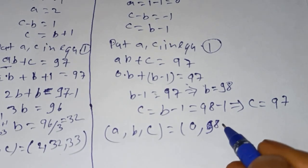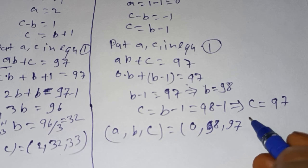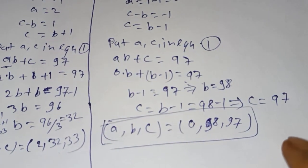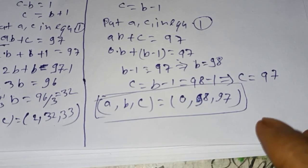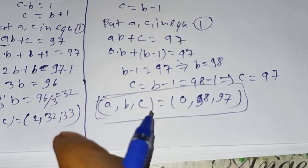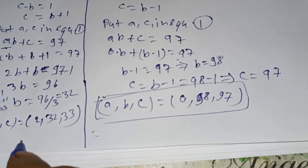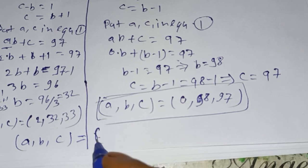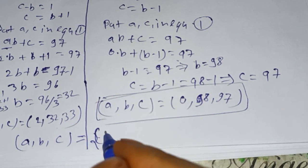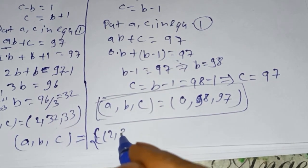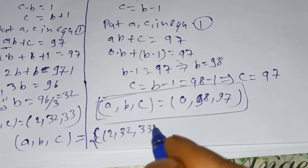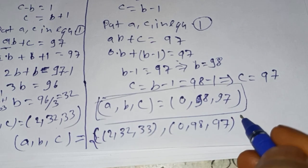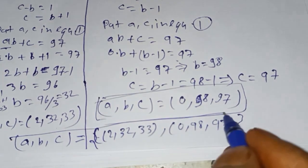So we have two cases and two sets of values: (a, b, c) = (2, 32, 33) and (a, b, c) = (0, 98, 97). These are the final answers.